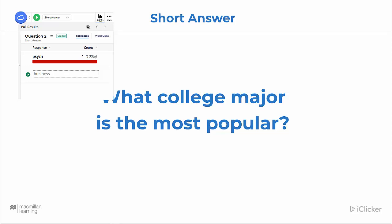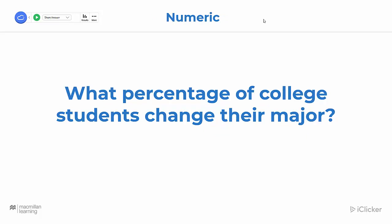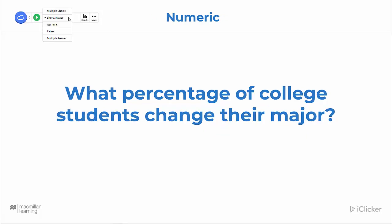I'm going to click results again to hide it, and now I'm ready for my next question. This next question type is a numeric question type. I'll simply select numeric, and then hit the play button.